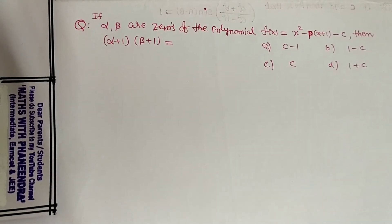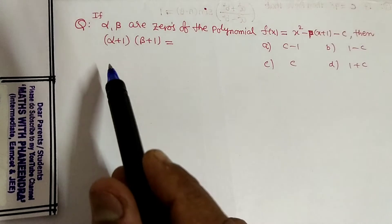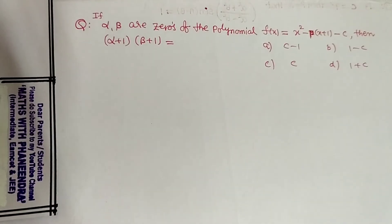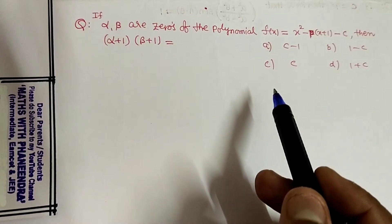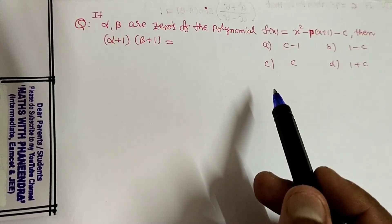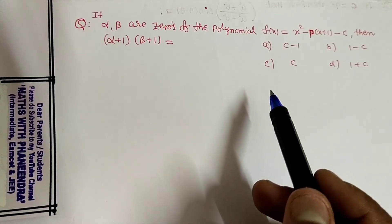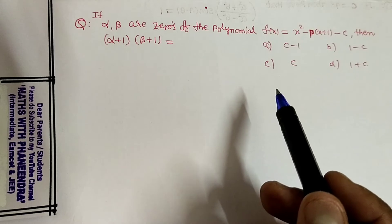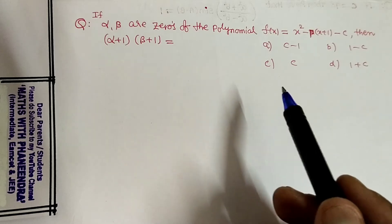Hello dear students, here we will discuss one question. If alpha, beta are zeros of polynomial f of x equal to x squared minus p into x plus 1 minus c, then find the value of alpha plus 1 into beta plus 1.